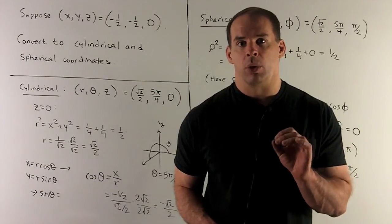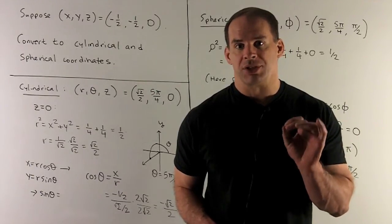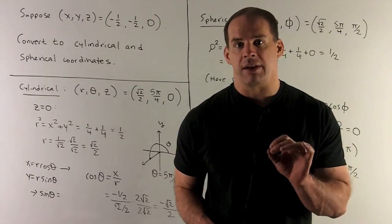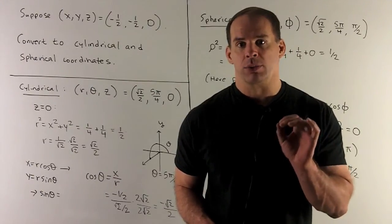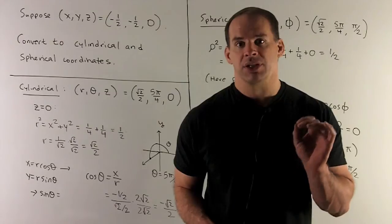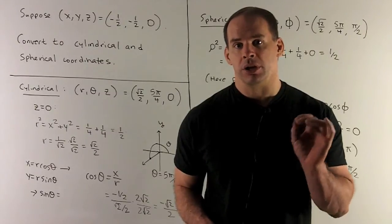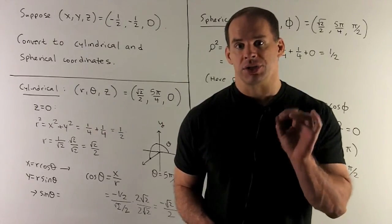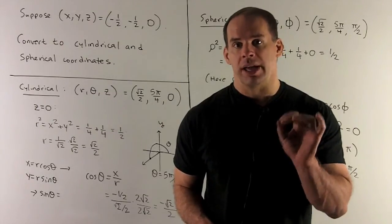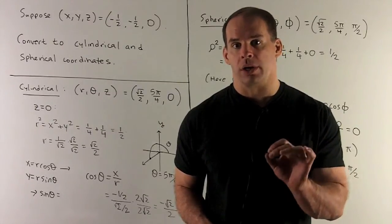Consider the rectangular point: x equals minus a half, y equals minus a half, z equals zero. Convert to cylindrical and spherical coordinates.